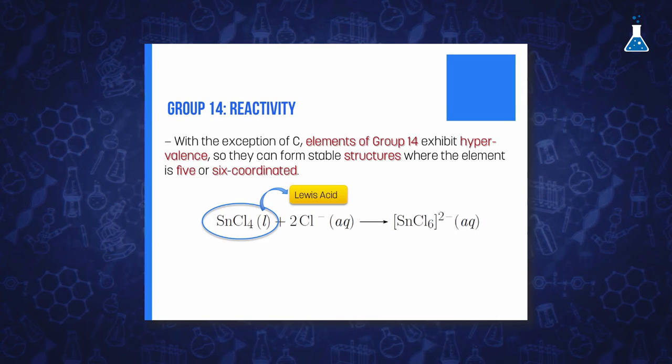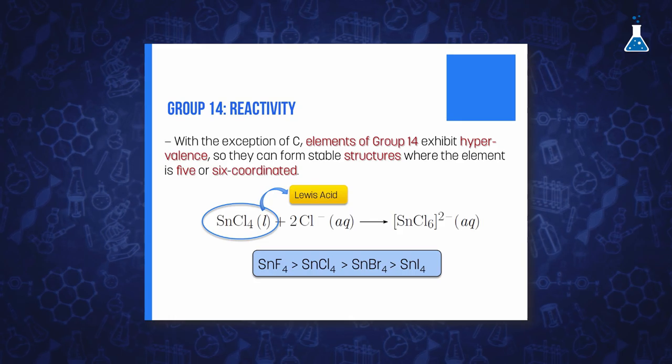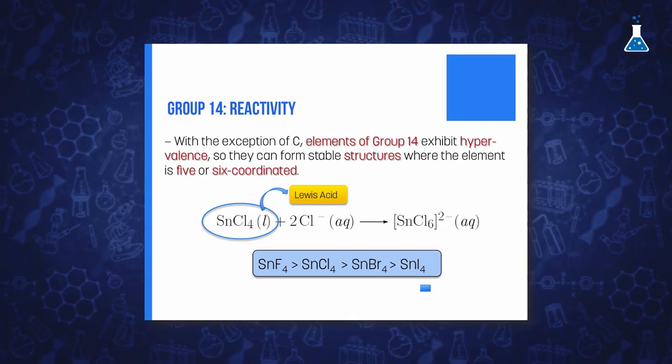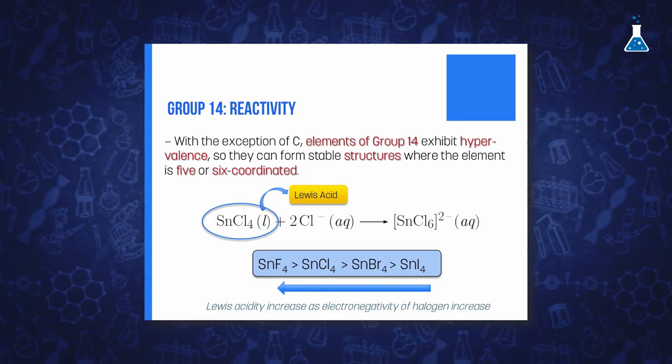Interestingly, if we compare the different Lewis acidity of the tin 4 tetrahalides with the complete series of halogens, we observe that it increases as the electron withdrawing power of the halogen increases. That is, from iodine to fluorine, same as silicon tetrahalides, but in the reverse way of what is observed in the case of boron halides.